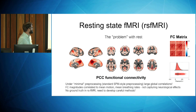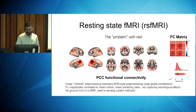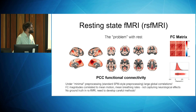Under typical minimal pre-processing pipelines — things like standard SPM pre-processing or FSL — you have very large global correlations; everything is correlated. Another big problem is that the correlation magnitudes you get are correlated to things such as mean head motion, mean breathing rates, and sometimes hardware effects. They're not really capturing neurological effects. And there's no ground truth in resting state fMRI, which is why there's a lot of research into denoising.